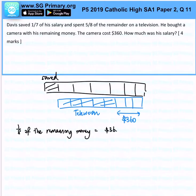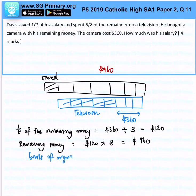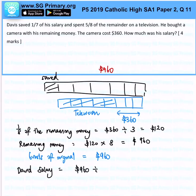1 over 8 of the remaining money would be 360 divided by 3, which is 120 dollars. The remaining money would then be 120 times 8, which gives us 960. This actually represents 6 units of the original. So 6 units equals 960, and David's salary would be 960 divided by 6, times 7 units, which gives us 1120 dollars.